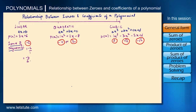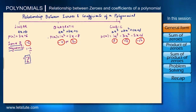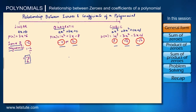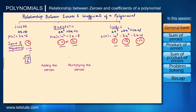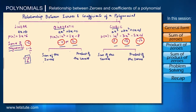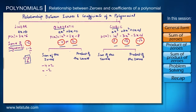We've seen the relationship for a linear polynomial as minus b upon a. Let's now move on to quadratic and cubic polynomials. Since they have more than one zero, what will happen if we add the zeros or multiply them? Let's see if we can establish a similar relationship. Taking the sum of the zeros, which are minus four and two: minus four plus two equals minus two.